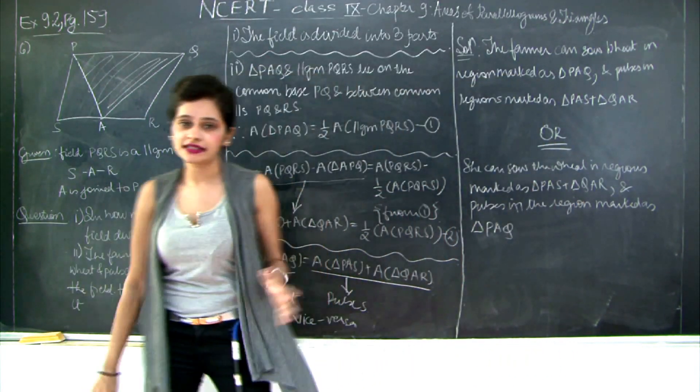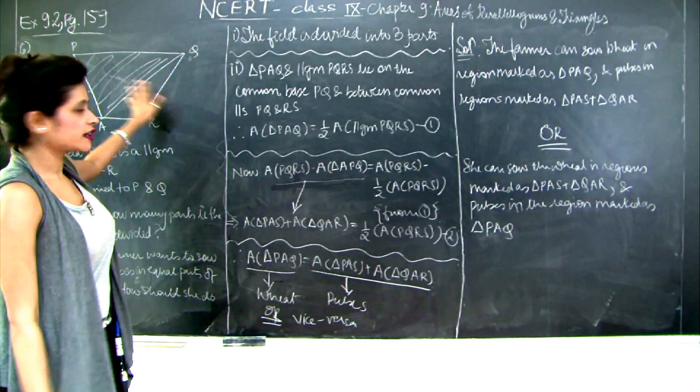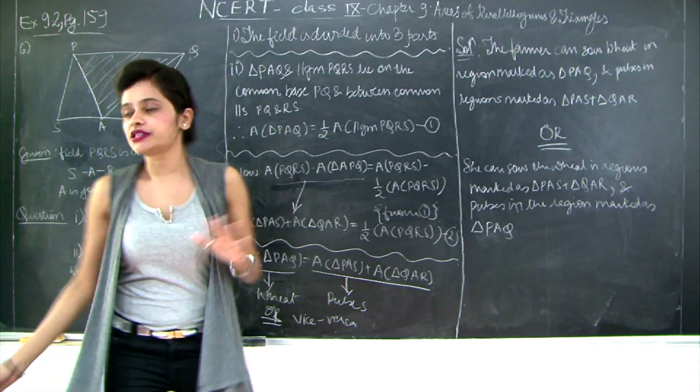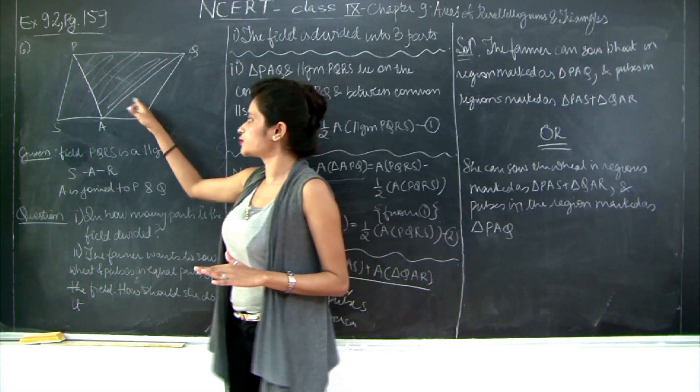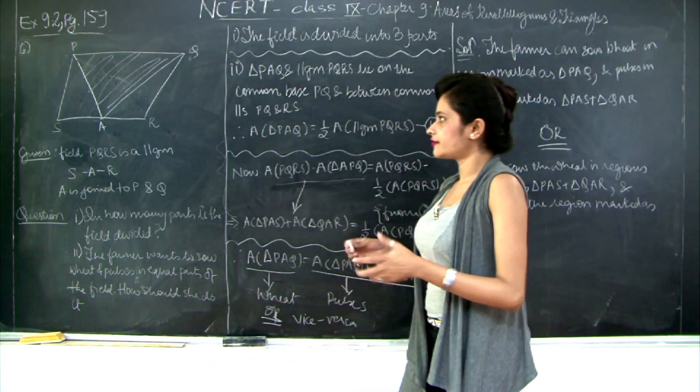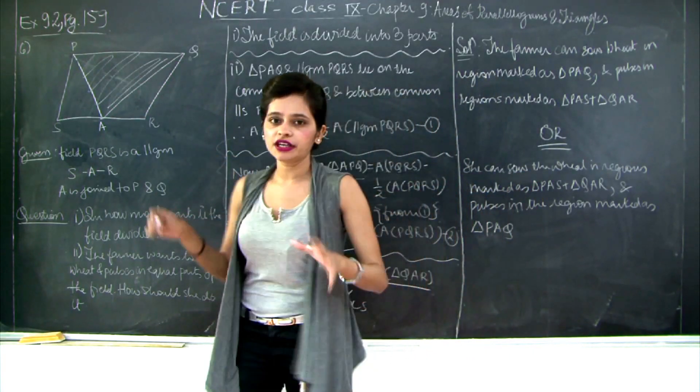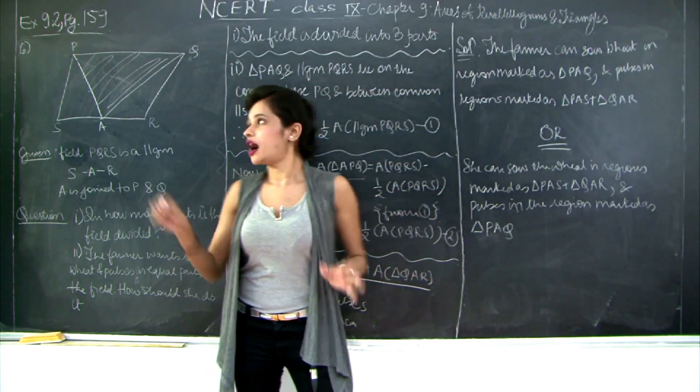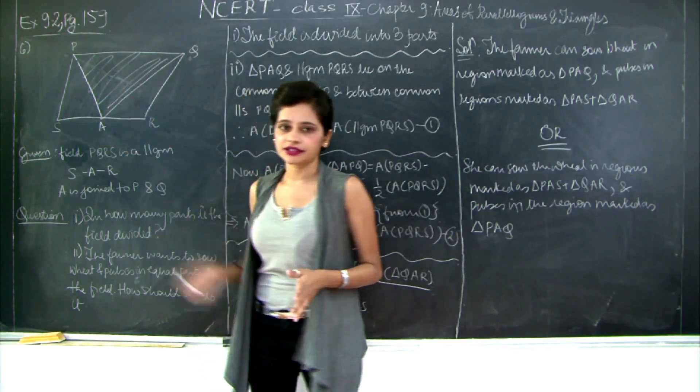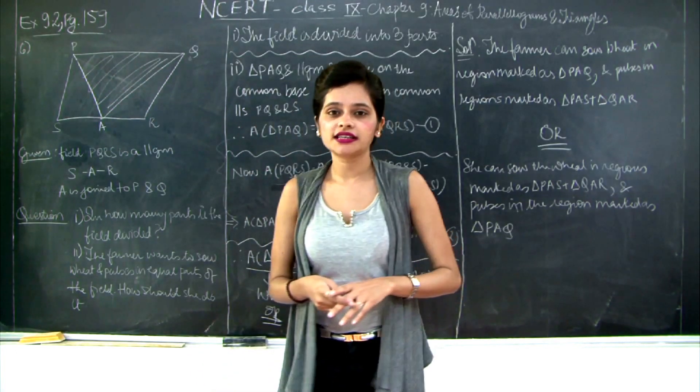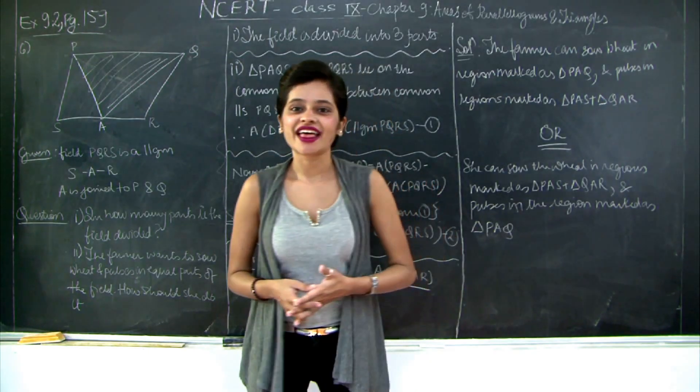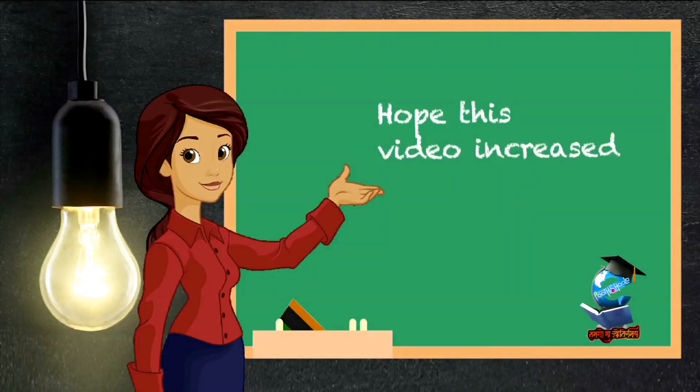So this is the solution to the question. The first question was very simple. The second question, all you had to do is show that the center of this field, triangle PAQ, is equal to the sum of these two triangles. So that would divide your parallelogram into two equal halves. Therefore the wheat and pulses can be grown in either of the half sections. So this was about exercise 9.2. We will continue with the remaining topics of this chapter in the next videos. Thank you, hope this video increased your knowledge.